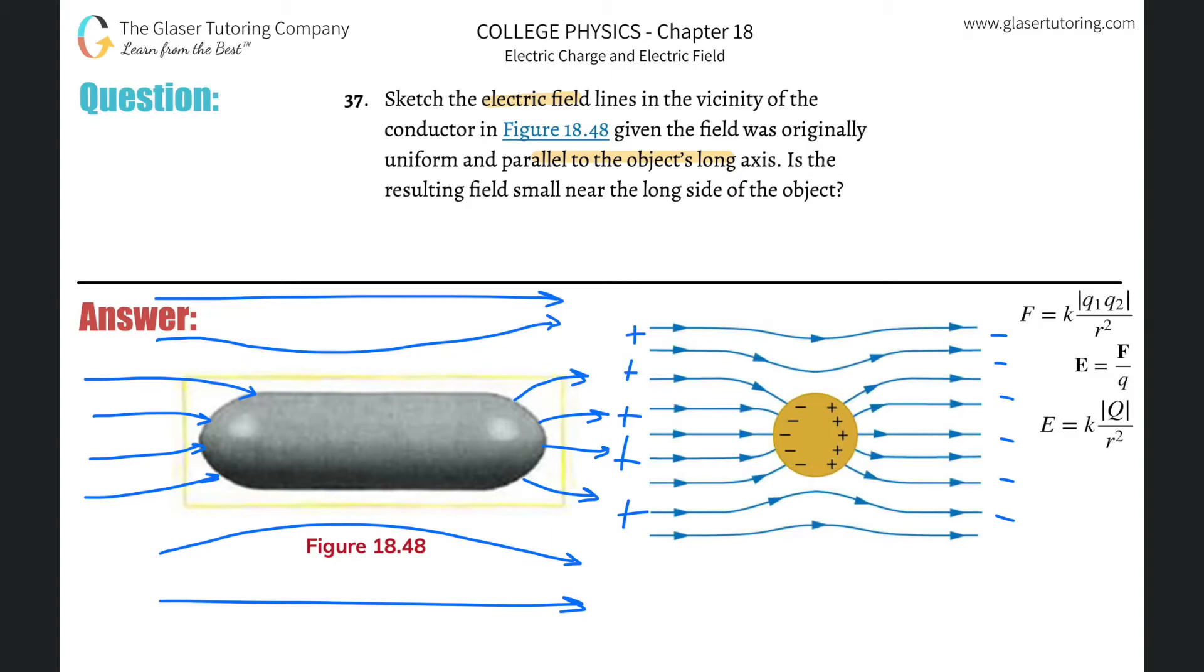This electric field will polarize the object. That should be apparent. If it's a metal object, there are freely moving electrons in there.